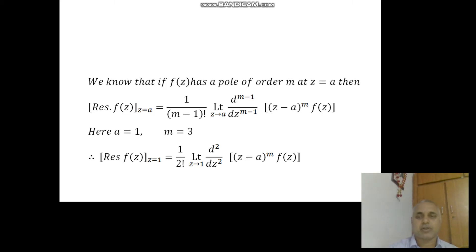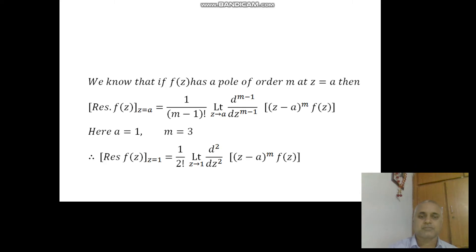Substituting A and M values into the formula: the residue of f of Z at the pole Z = 1 equals 1 by 2 factorial, into limit Z tends to 1, of the second derivative with respect to Z of (Z minus 1)³ into f of Z.